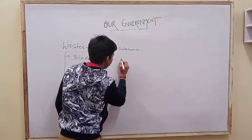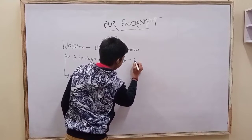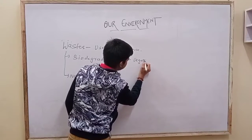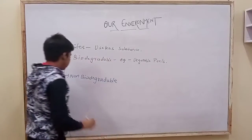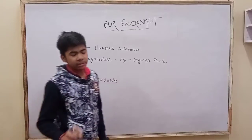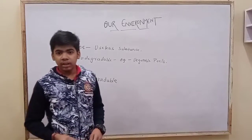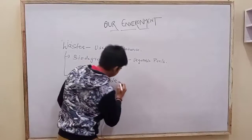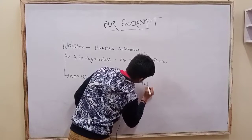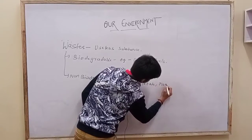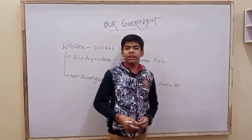Biodegradable substances include vegetable peels. Non-biodegradable are substances which cannot be broken down by microorganisms, and they consist of plastics and metals. So this is a short summary of our chapter 15. Thank you.